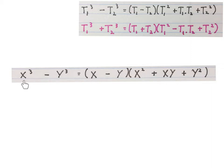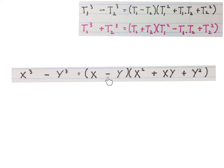Let me recap: take the cube root of the first term and write it here. Take that sign and write it there. Take the cube root of the second term and write it there. Then take the first term times itself and write it there. Take the first term times the second term, which gives minus xy — change the sign and write plus xy. Take minus y times itself and write it there: plus y squared.